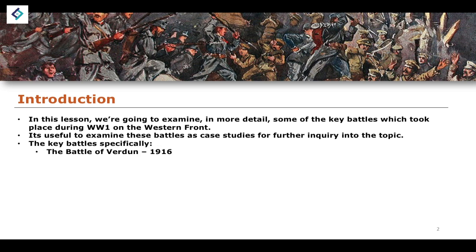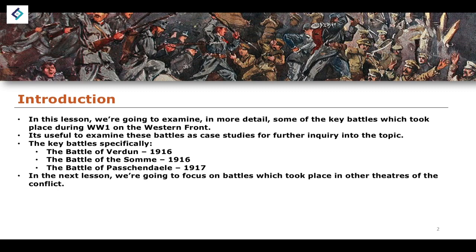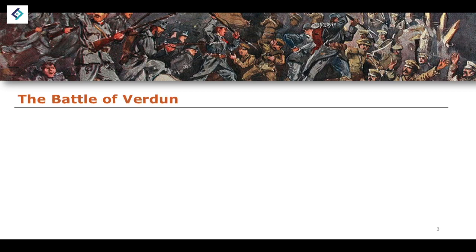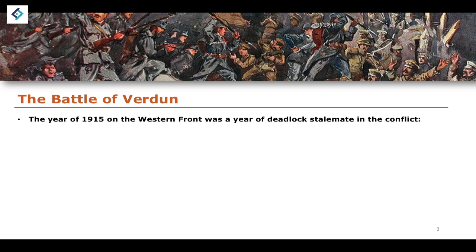Specifically, the battles we're going to look at are the 1916 Battle of Verdun, the Battle of the Somme in 1916, and then in 1917 the Battle of Passchendaele. We will look at battles that take place on other theatres of the conflict in future lessons — the next lesson we're going to look at Gallipoli, for example. So, let's begin first with the Battle of Verdun.